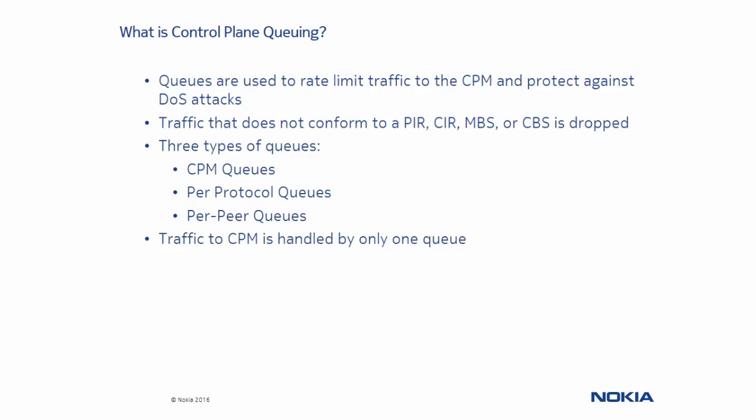CPM queues can have their committed burst size, maximum burst size, committed information rate, and peak information rate configurable. Traffic that does not conform to these parameters is dropped.